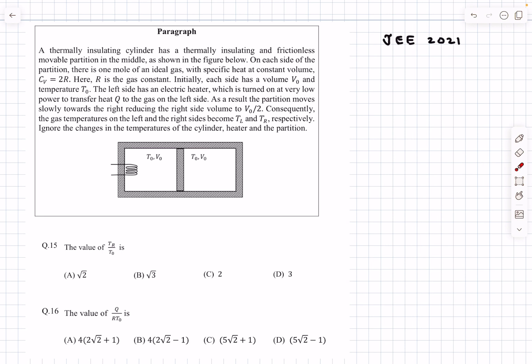The problem statement is: we have a thermally insulating cylinder that has a thermally insulating and frictionless movable partition in the middle. What thermally insulating essentially means is that if we take a point here, there won't be any heat transfer from inside to the outside.